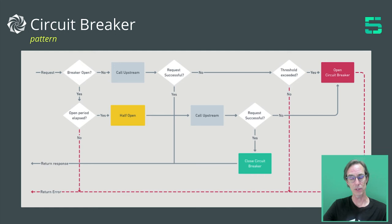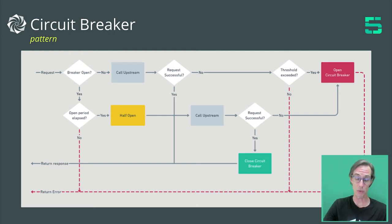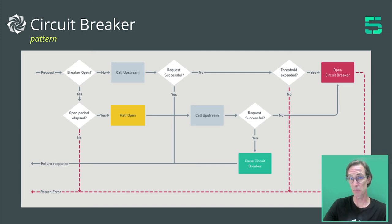What the circuit breaker attempts to do is remove a service from the load balanced rotation when it continually fails. The foremost reason is that if a service is failing just because it's busy, actually breaking the circuit and not sending any requests to it will allow it to recover. In the instance that it's completely faulty, you remove it from the process and fail fast. That ultimately protects the system downstream from any slowness which can occur upstream.